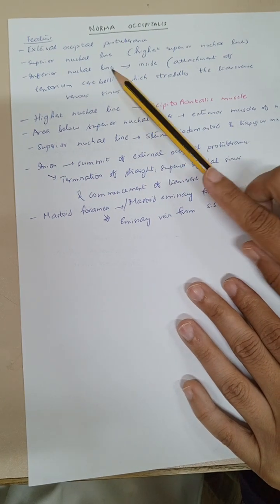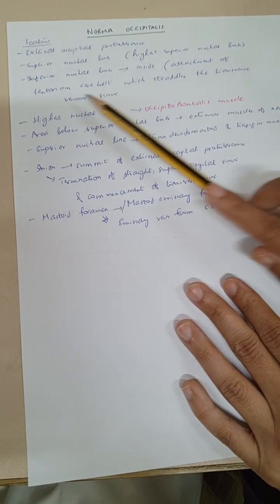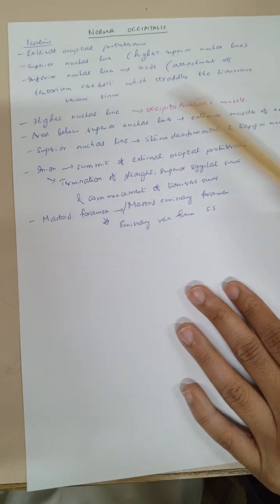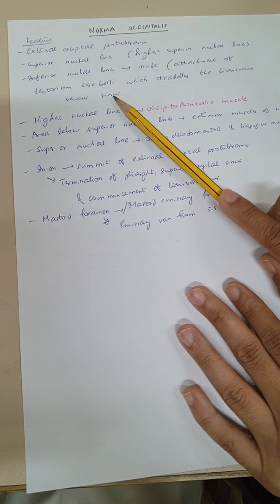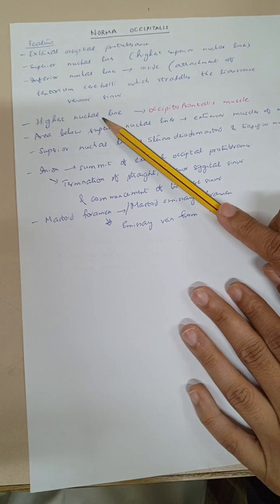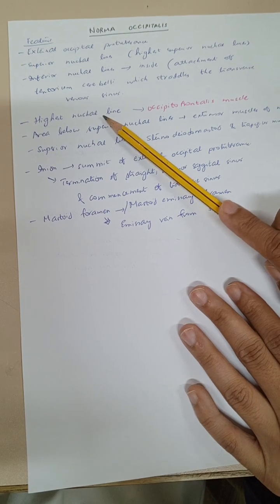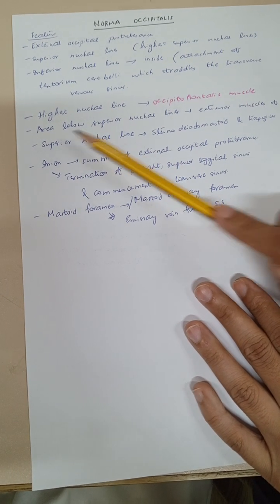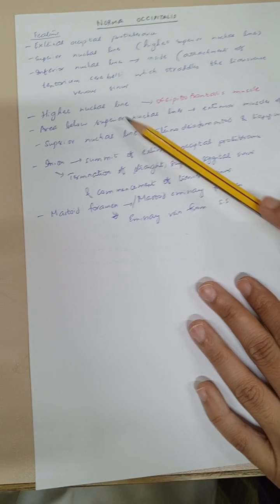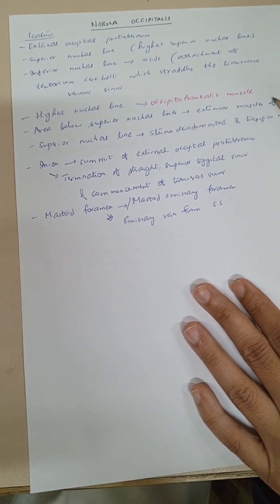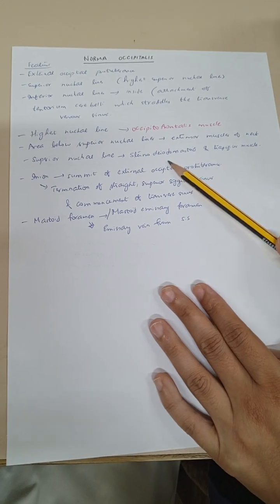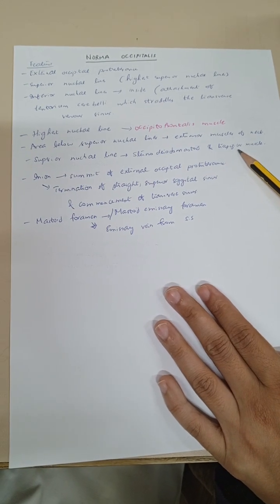On the inferior nuchal line, there is attachment of the tentorium cerebelli which straddles the transverse venous sinus. On the highest nuchal line, occipital frontalis muscle attaches. In the area below the superior nuchal line, extensor muscles of the neck attach. On the superior nuchal line, sternocleidomastoid muscle and trapezius muscle attach.